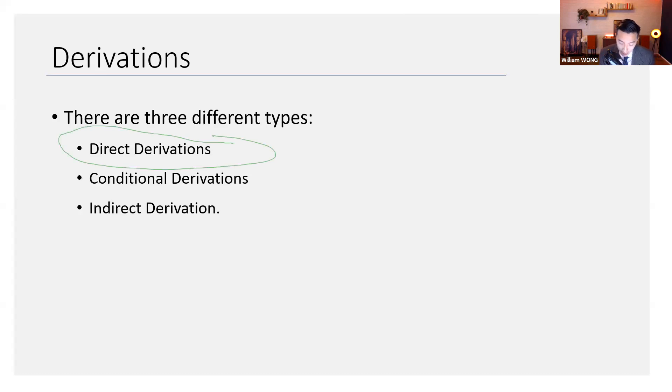Next time, we'll do both conditional and indirect. Indirect derivation is another way of saying proof by contradiction. Those in maths or perhaps computer science may have heard of that.